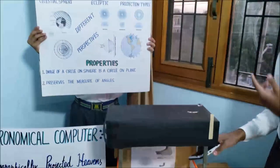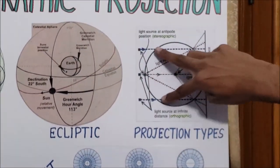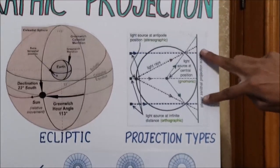Now take a look at this chart over here. The source of light is at an infinite distance away and as it comes the projection is made like this.